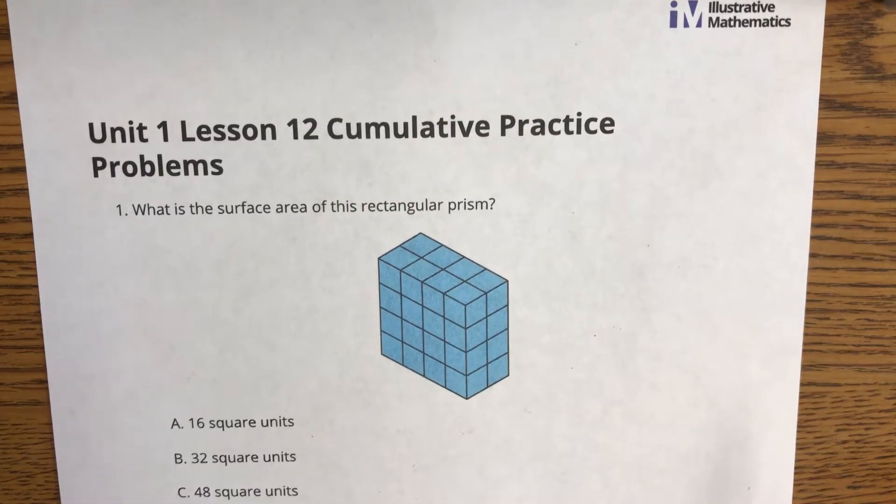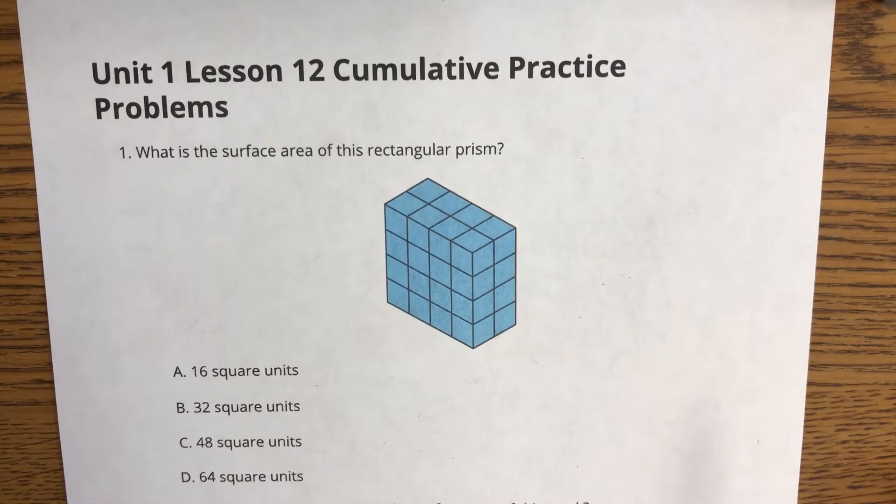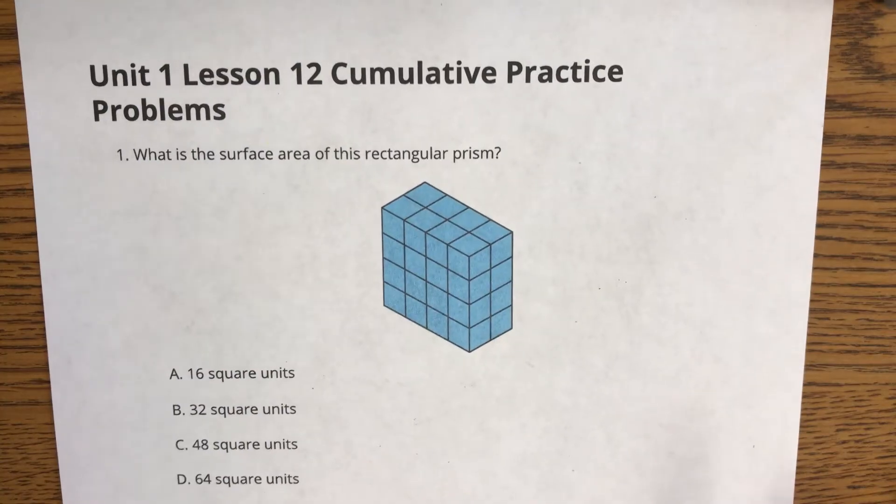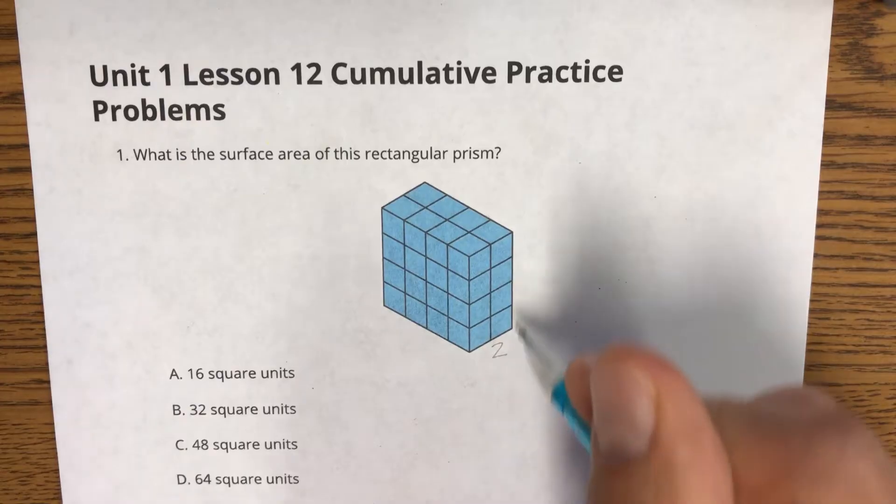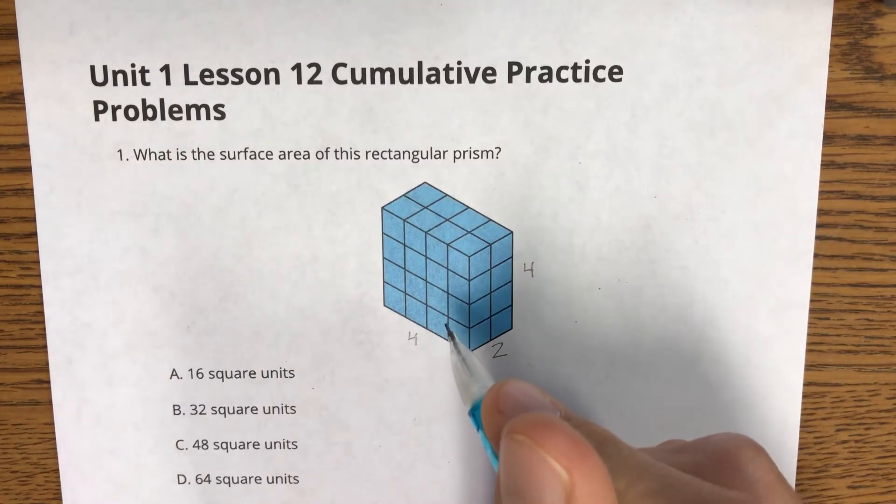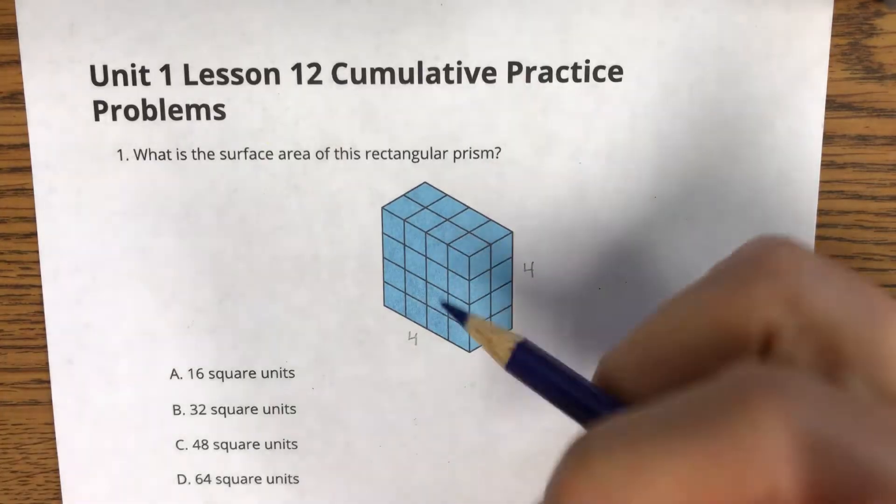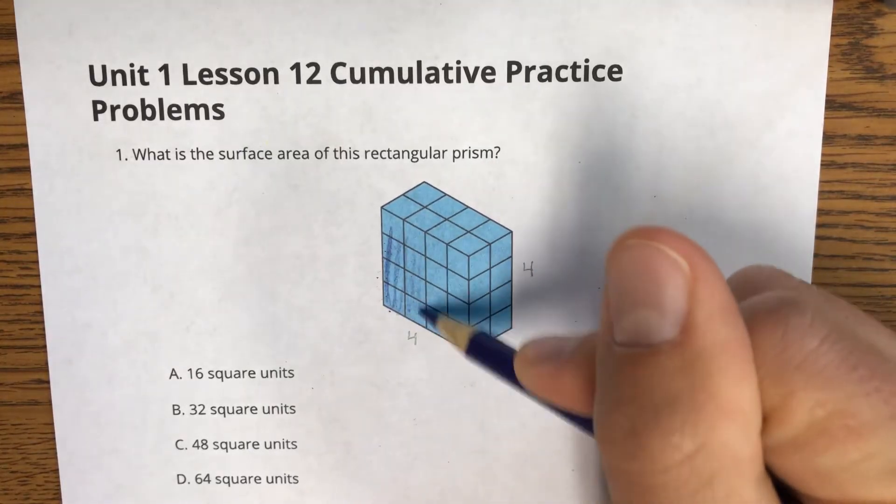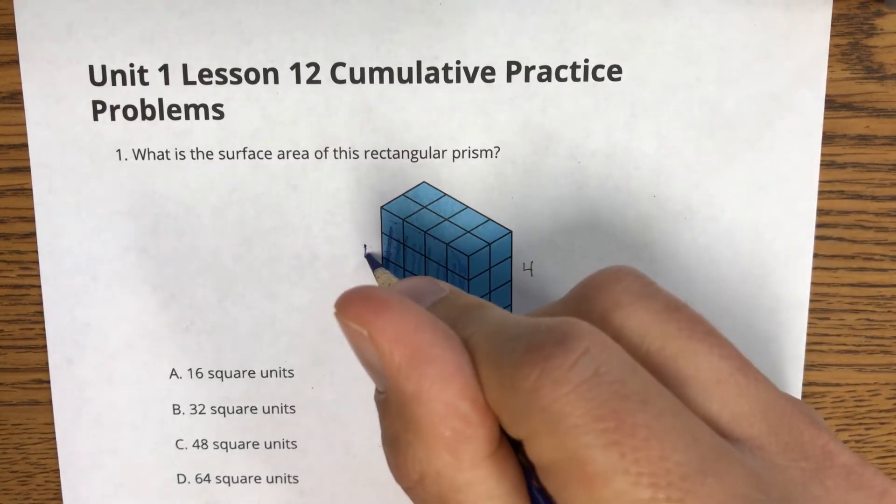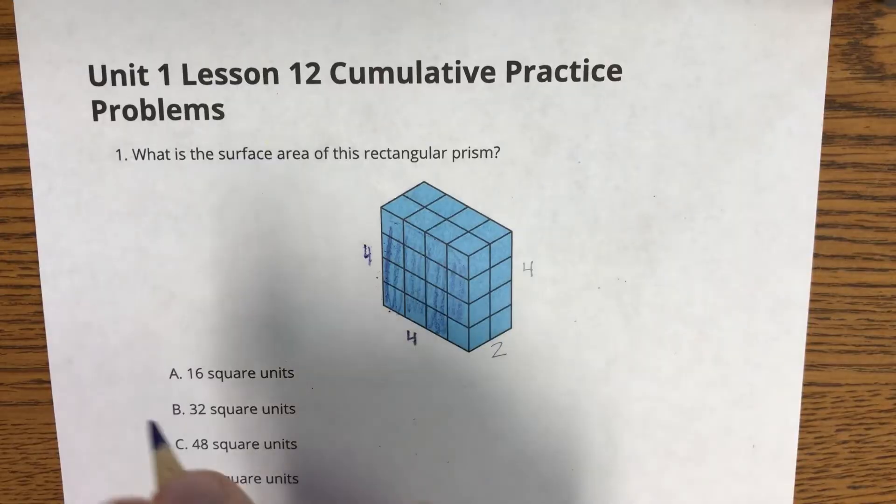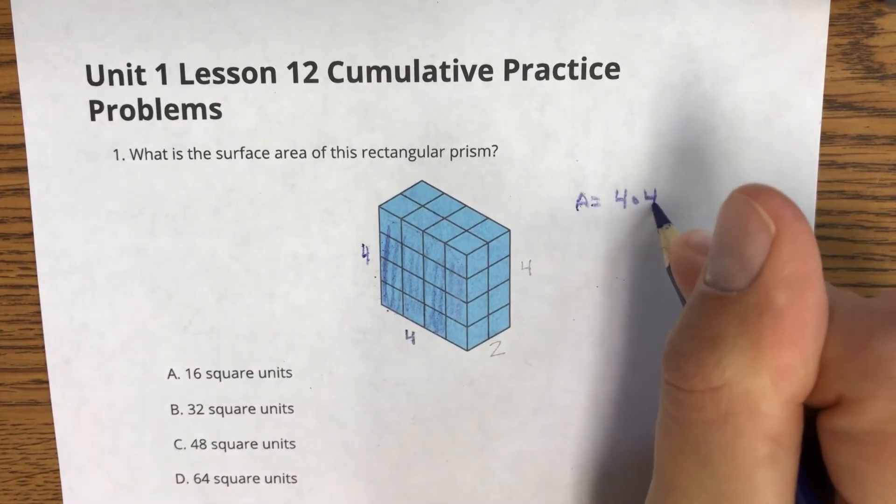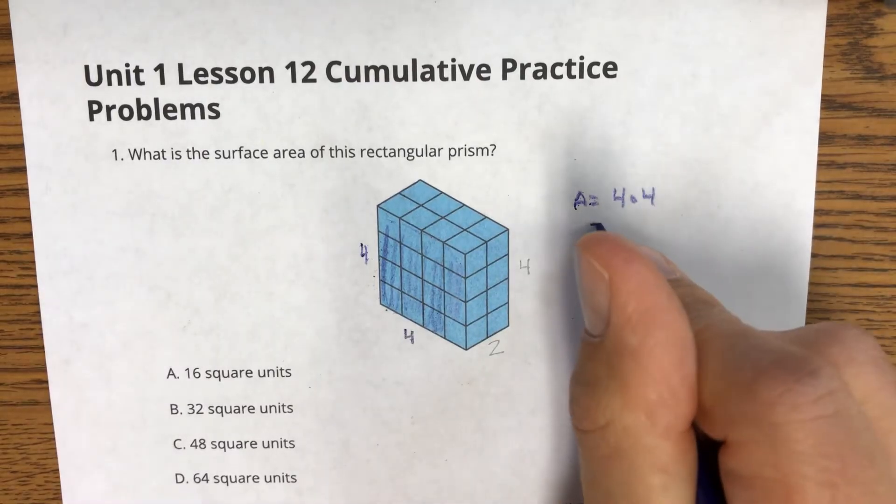In our first question, we're asked to calculate the surface area of this rectangular prism, and we're given four choices. Well, this side has a length of two, a length of four, and a length of four. And if we just focus on one side at a time here, if I focus on this side here, this is 4 by 4, so the area of that is going to be 4 times 4, which is 16.